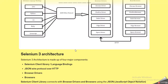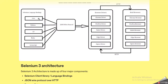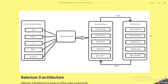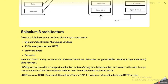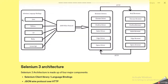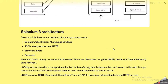Now for the Selenium 3 architecture: the code written in different languages is fed to the JSON Wire Protocol. The JSON Wire Protocol then communicates with the browser drivers, and the browser drivers communicate with their respective browsers. So the architecture of Selenium 3 has: Selenium client library or language bindings, the JSON Wire Protocol over HTTP, the browser drivers, and browsers. The Selenium client library connects with browser drivers and browsers using the JSON Wire Protocol.